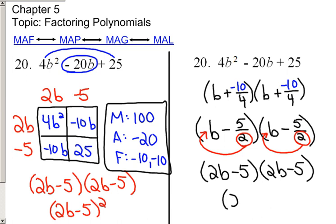And of course, the best way to write this is 2B minus 5 quantity squared.